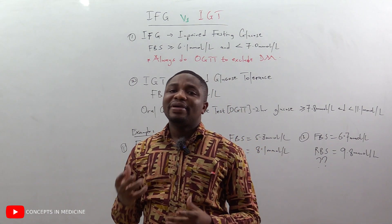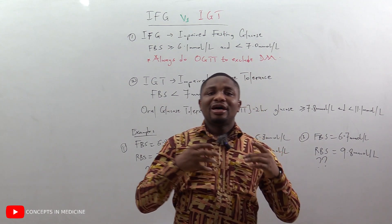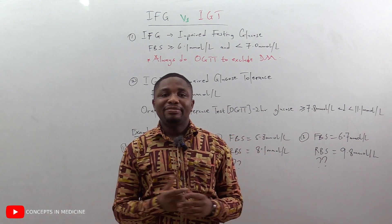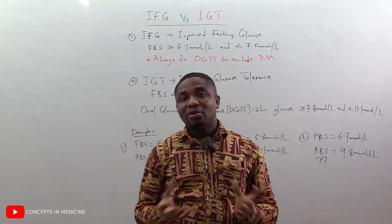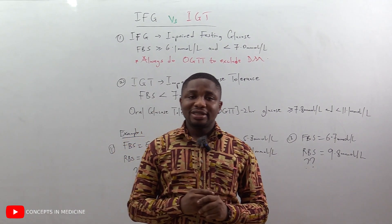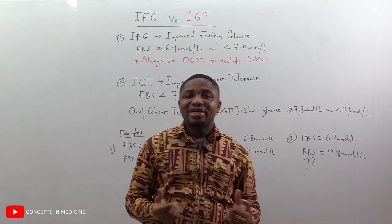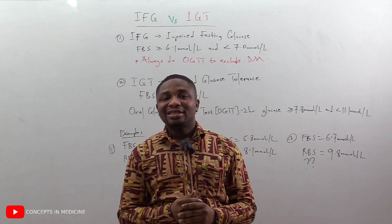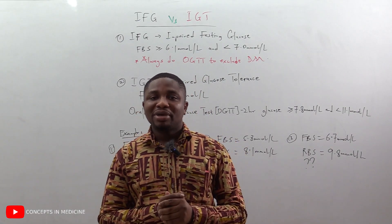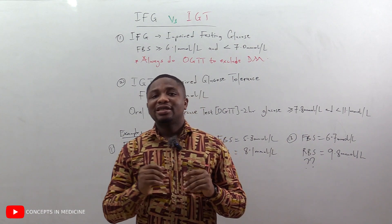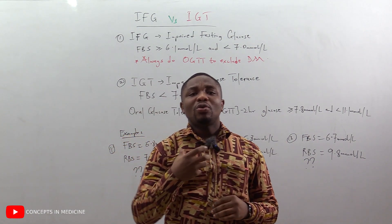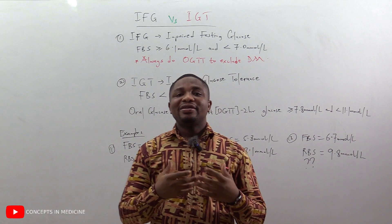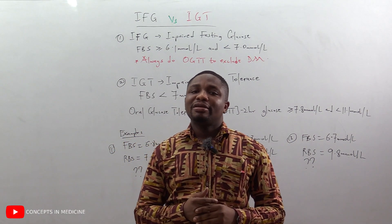Both impaired fasting glucose and impaired glucose tolerance represent a window for lifestyle modification and they indicate a pre-diabetes state. If your blood sugar falls within that range, lifestyle modifications such as diet, weight loss, and exercise are very important in averting progression to diabetes mellitus. Impaired fasting glucose progresses lower to diabetes mellitus than impaired glucose tolerance — in other words, impaired glucose tolerance is more dangerous than impaired fasting glucose.